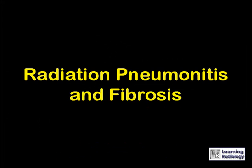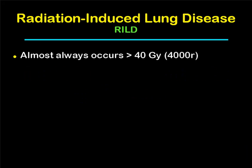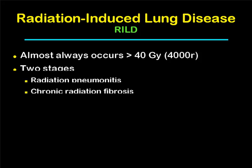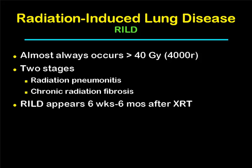Radiation pneumonitis and fibrosis: radiation-induced lung disease, or RILD, almost always occurs at doses greater than 40 gray or 4,000 rads. It usually occurs in two stages — first radiation pneumonitis and then chronic radiation fibrosis. Radiation-induced lung disease in general appears about six weeks to six months after radiation therapy treatments.